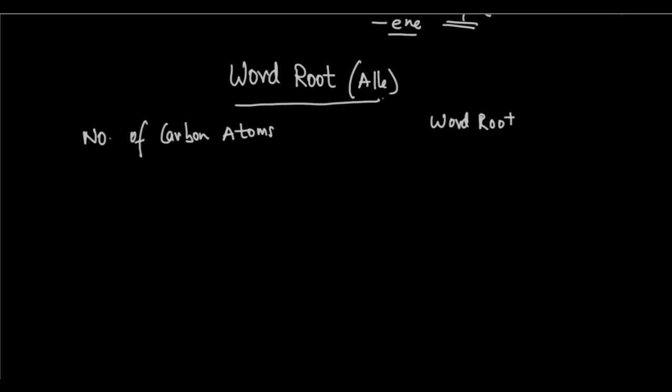If there is one carbon atom, the word root is 'meth'. For example, if there's one carbon atom and it's an alkane, with no substituent, no functional group, you have word root 'meth' plus primary suffix 'ane' — so it's methane. Next, two carbon atoms — the word root is 'eth'. An alkane with two carbon atoms is ethane: 'eth' plus 'ane'.